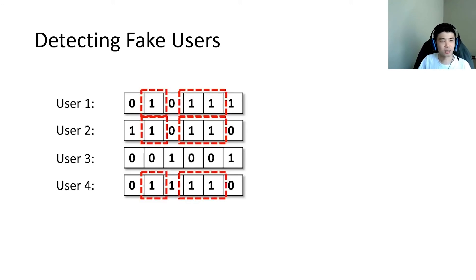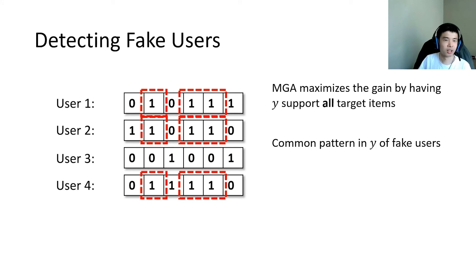The key idea of detecting fake users is that a set of items will always be supported simultaneously by the fake users. For instance, in this illustration of OUE, the 2nd, 4th, and 5th bits are ones simultaneously for 3 users.